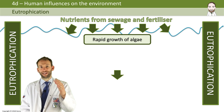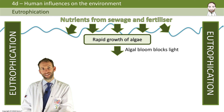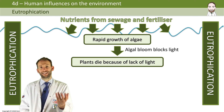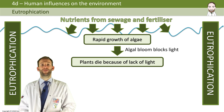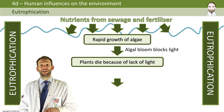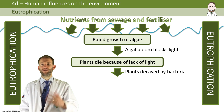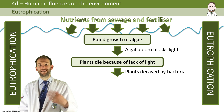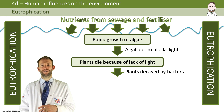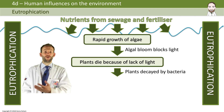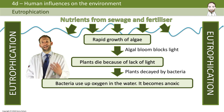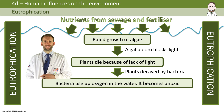Now if there's no light coming in, the plants underneath just die — they don't get any light and they die. When they die, they get broken down by bacteria. The bacteria go absolutely crazy; they love all these dead plants that are forming, and so the bacteria use up all the oxygen in the water, and the water becomes what we call anoxic.